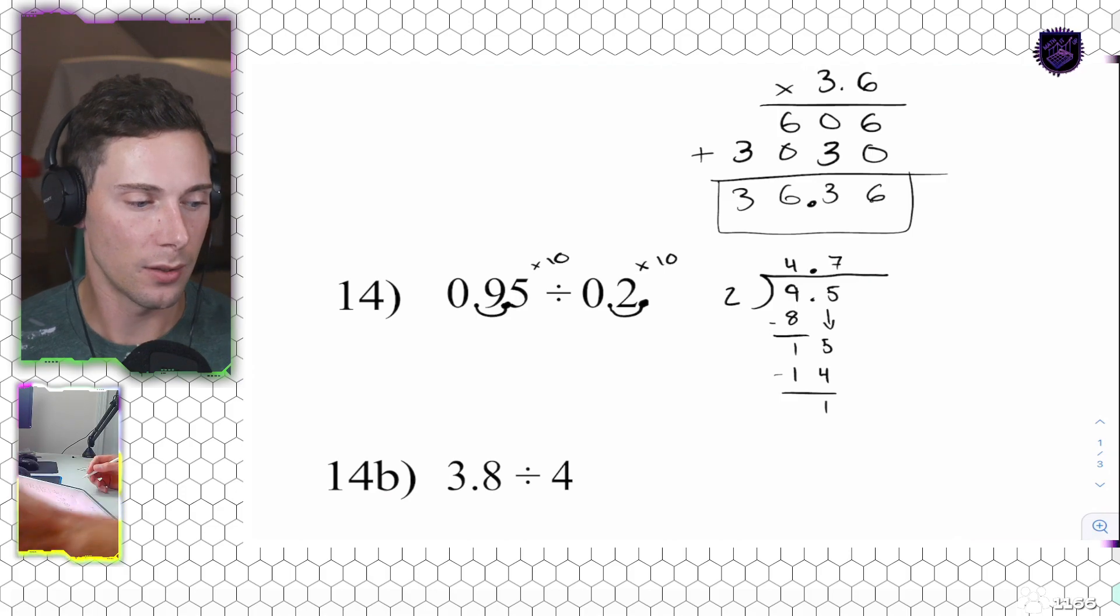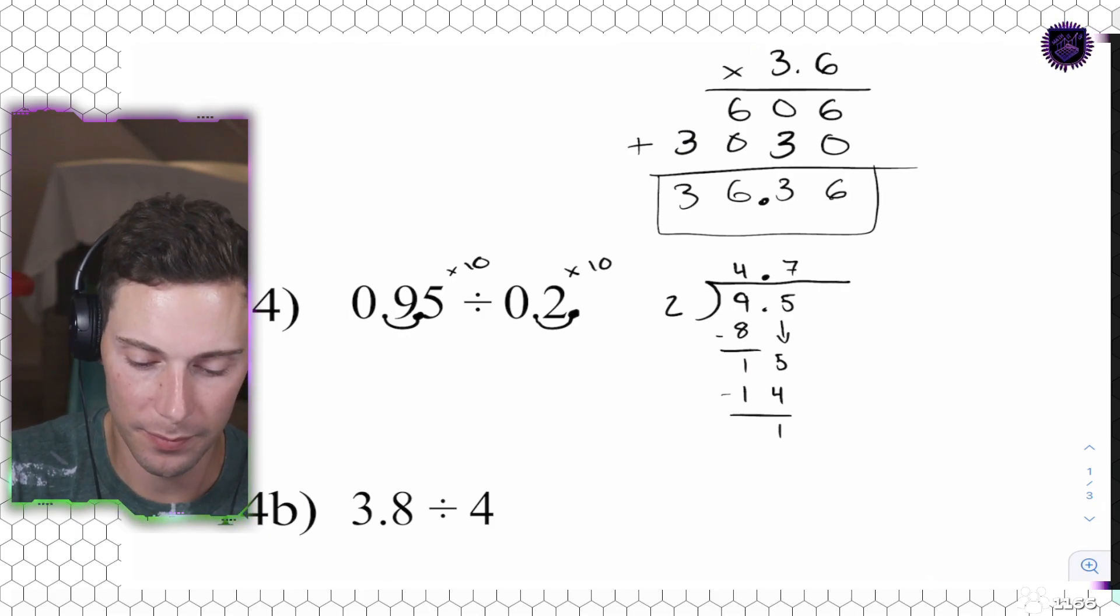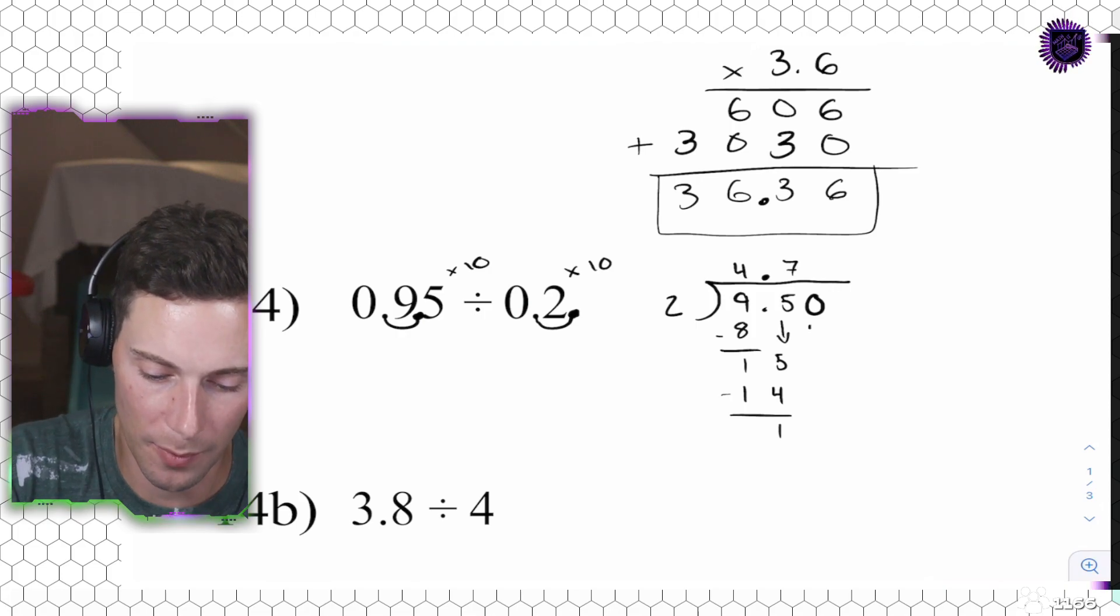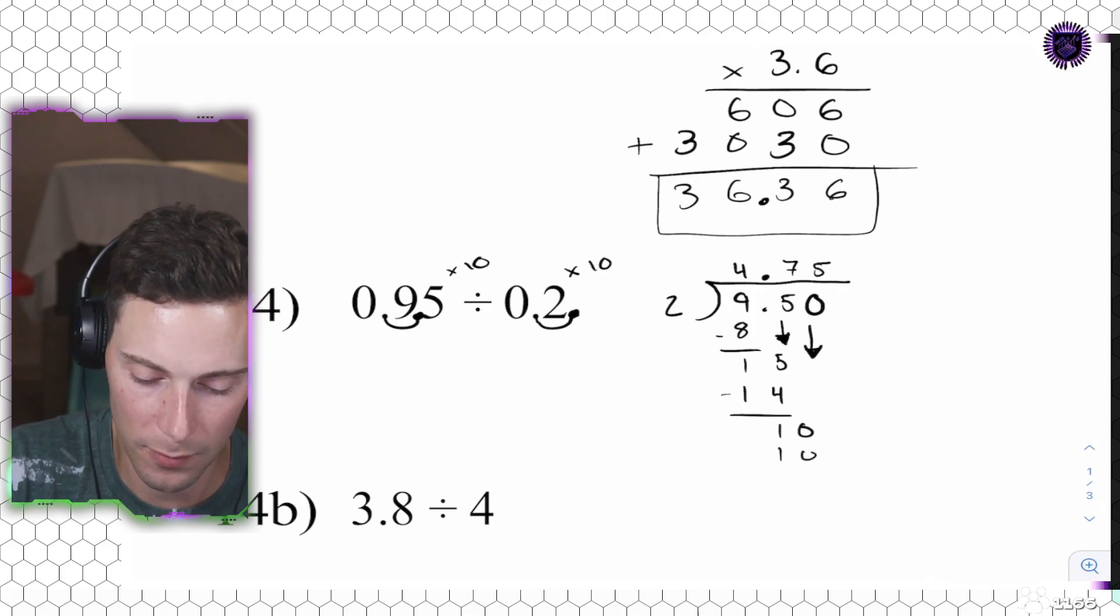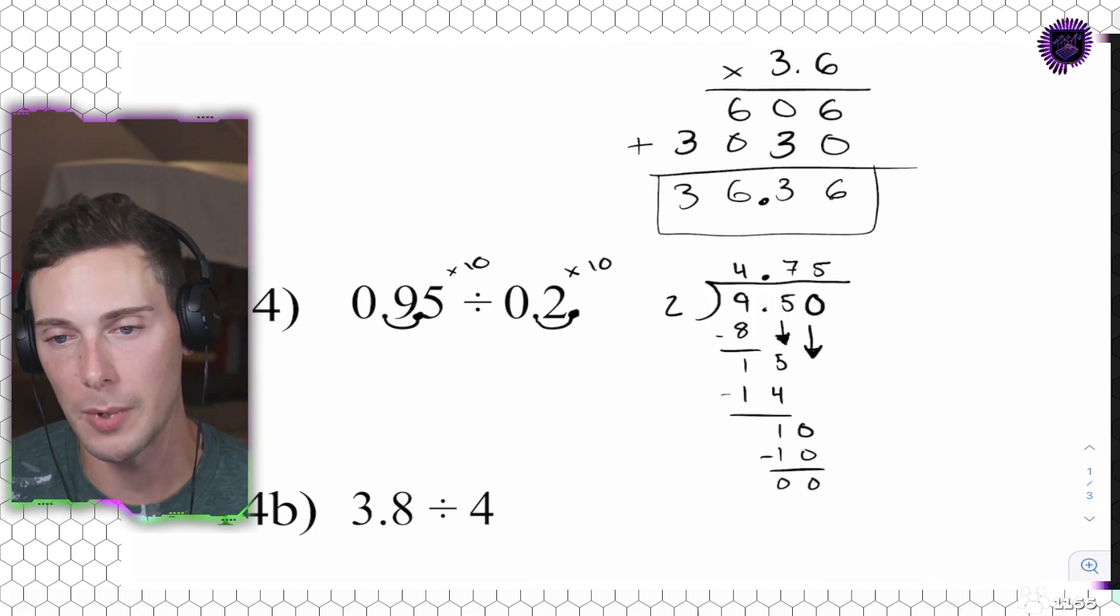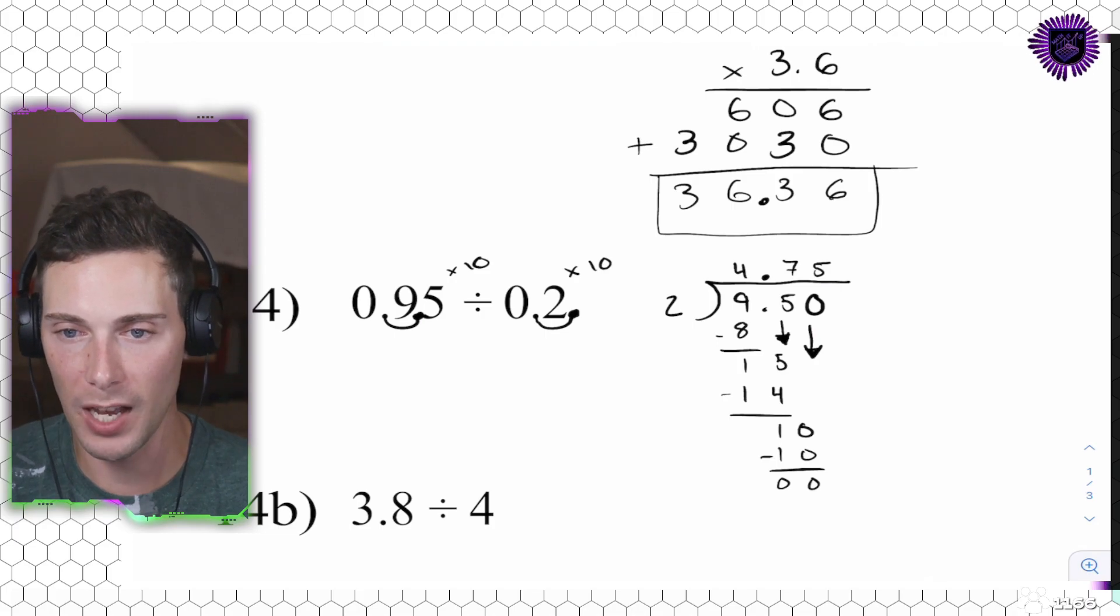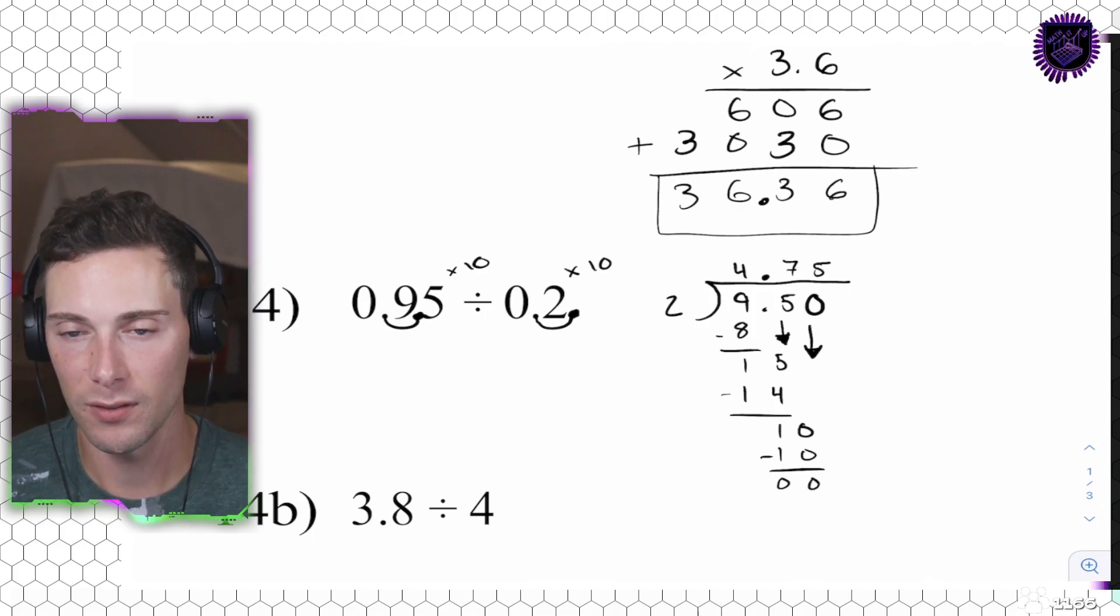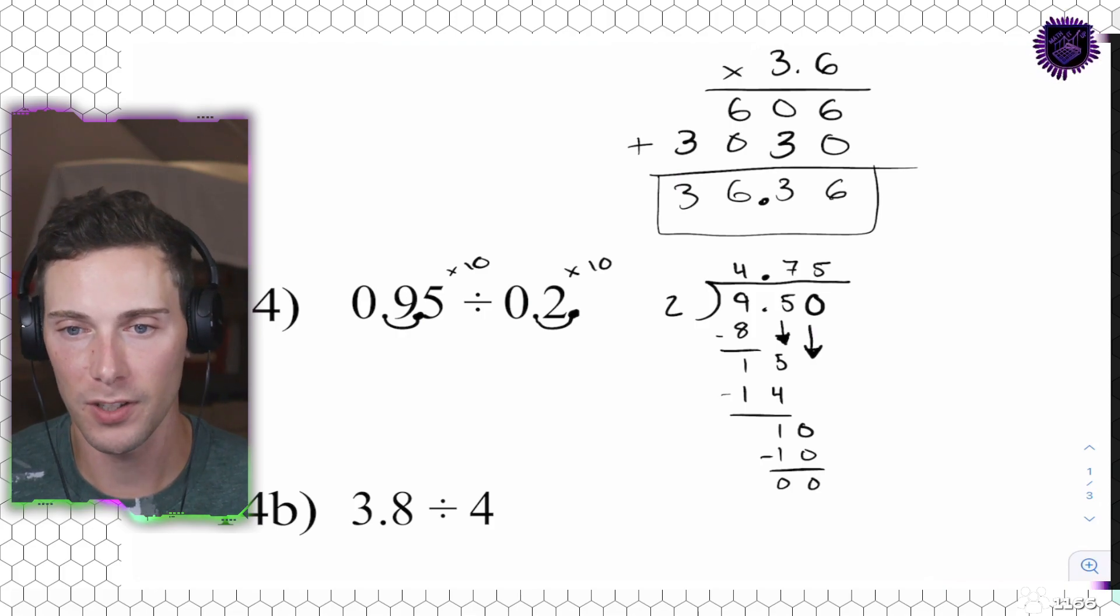That will leave us with a remainder of 1 again. And, we don't have a number to drop down. Oh, no. But, that's okay. Because, what we're going to drop down is going to be a placeholder. If you remember, you can have a placeholder. It looks like this. And, we're just going to drop that 0 down. So, that 0 will come down here. Does 2 go into 10? Yes. 5 times. Make exactly 10. And, that's going to leave us with a remainder of 0. And, then we have 4.75 as our answer. So, 2 goes into 9.5, 4.75 times. Or, you can make 2 groups of 4.75, exactly 2 groups of 4.75 from 9.50 or 9.5.